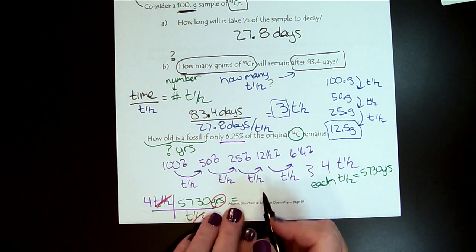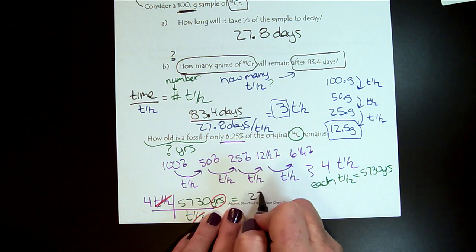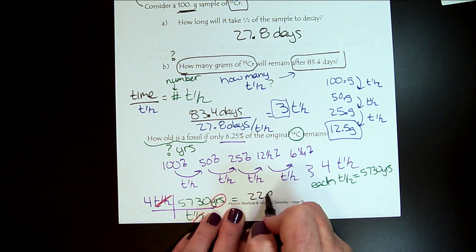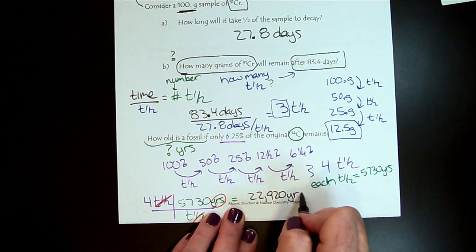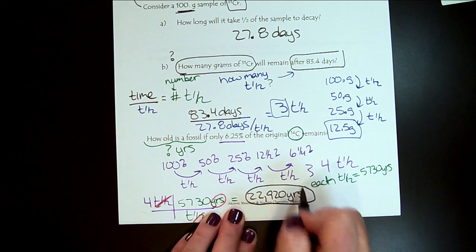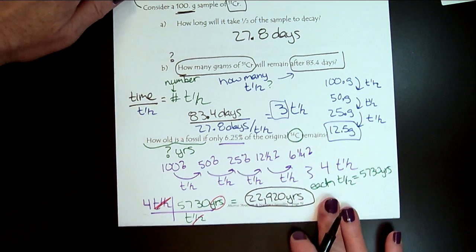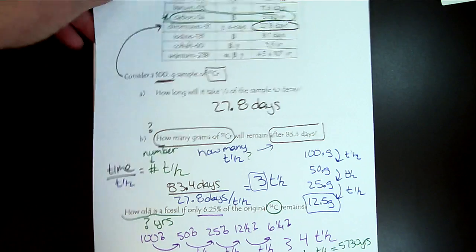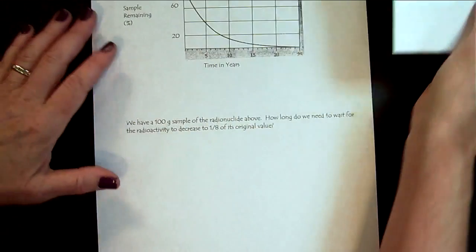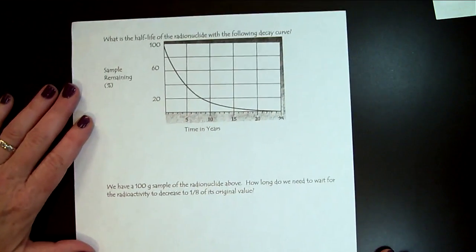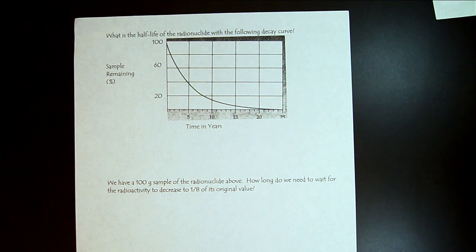And so when we do the calculation, we're going to get 22,920 years. So that's how old our fossil is. And I'm not going to grade you on sig figs for this, so don't worry about that. Now it looks like we have one more practice page on this. Students tend to struggle a little bit with this inverse relationship of half-lives, so I want to make sure that you have lots of guided practice to build your confidence.